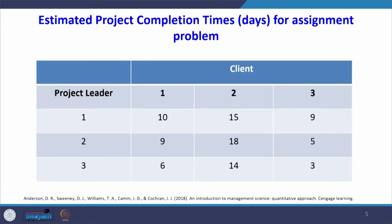This table shows the estimated project completion time in days. For example, leader 1 assigned to client 1 takes 10 days, to client 2 takes 15 days, and to client 3 takes 9 days. Project leader 2 takes 9 days for client 1, 18 days for client 2, and 5 days for client 3. Project leader 3 takes 6 days for client 1, 14 days for client 2, and 3 days for client 3. The objective is to assign project leaders to clients to minimize total completion time.